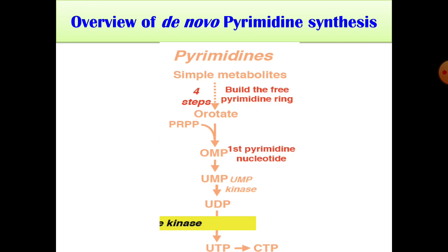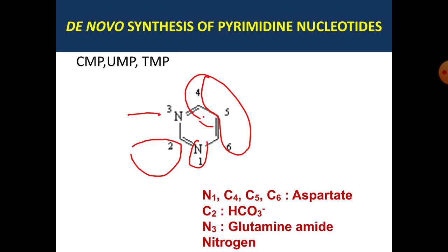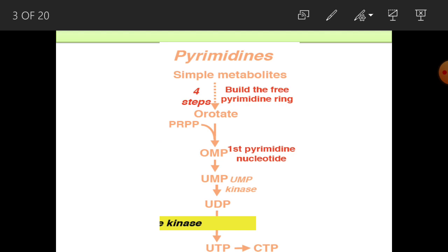There is a key difference between purine and pyrimidine synthesis. In purine synthesis, the ring is gradually built on ribose, but in pyrimidine synthesis, the free pyrimidine ring is formed first, and then subsequent molecules are attached. After four steps, orotate is obtained.